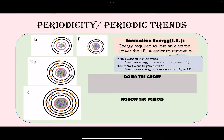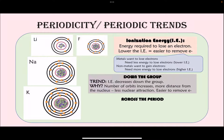Going down the group, the valence orbit becomes farther and farther from the nucleus, making it easier to remove an electron — so ionization energy decreases going down. The reason is the same: more orbits means more distance from the nucleus, which means less nuclear attraction, making it easier to remove the valence electron.